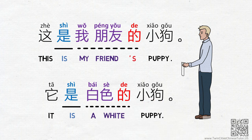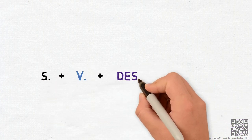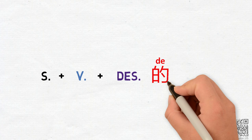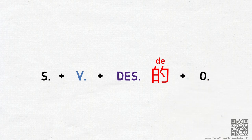These sentences follow a typical structure of: Subject + Verb (是) + Description + 的 + Object.